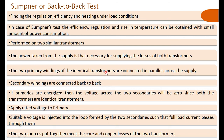The two primary windings of the identical transformers are connected in parallel and connected to the supply. The secondary windings of the two transformers are connected back to back — that is, in phase-opposition. The primary windings are connected in parallel, and the secondary windings are connected in phase-opposition. Rated voltage is applied to the parallel-connected primaries, and rated current is injected into the phase-opposition connected secondary windings — similar in principle to performing an open-circuit and a short-circuit test simultaneously.